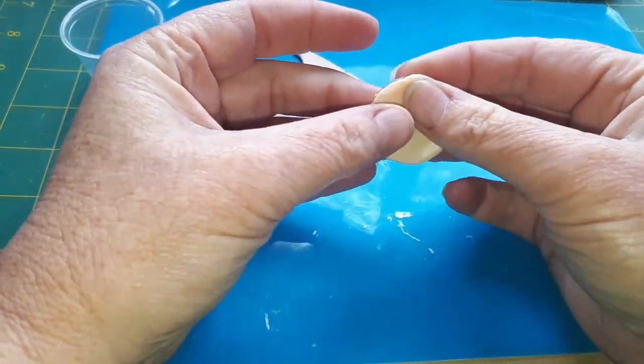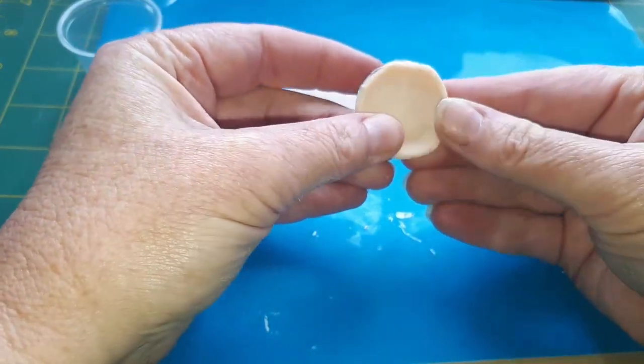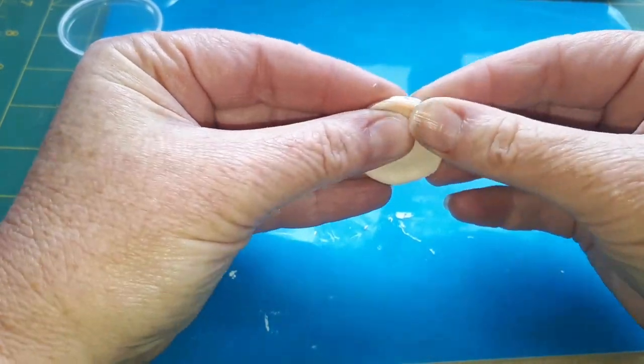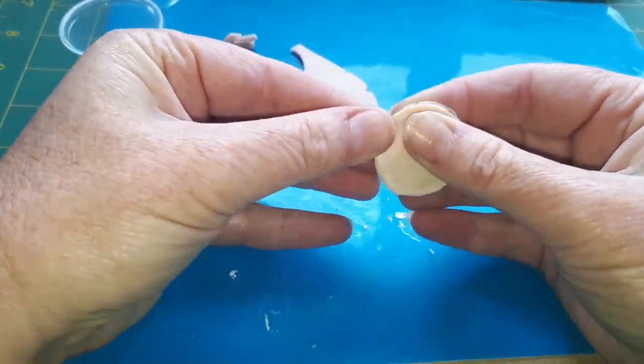Using the top half of a plastic container, I cut a circle out of polymer clay for the large platter and pressed it into the bottom part of the container to shape it.